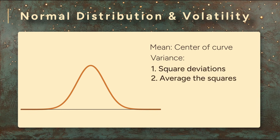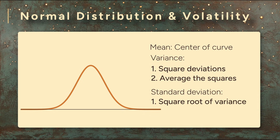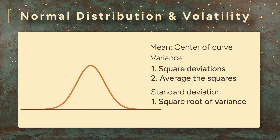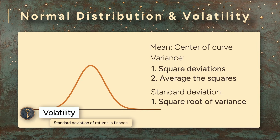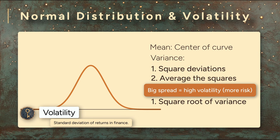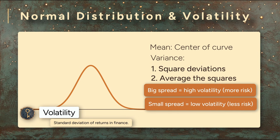Variance is calculated by squaring the deviations and averaging them. Then we take the square root to get standard deviation, so the units match the returns themselves. If returns are in percent, the standard deviation is also in percent. In finance, when we apply this to returns, we call it volatility. Big spread, high volatility. Small spread, low volatility. This is a common way quants measure risk.